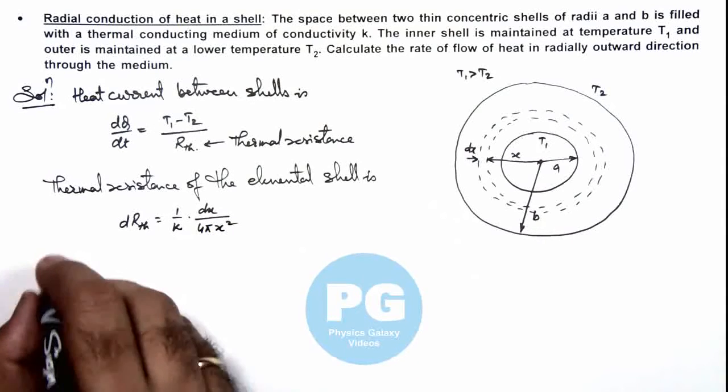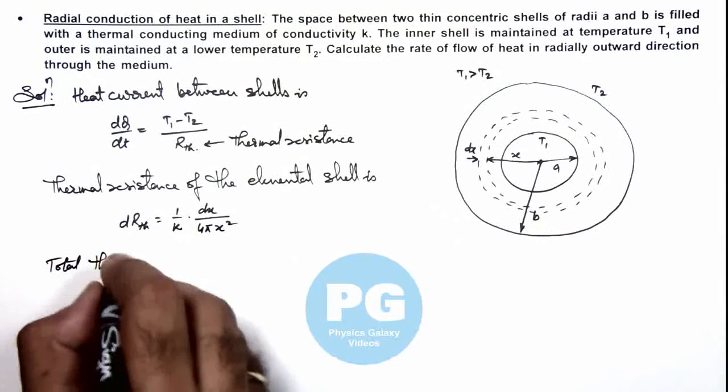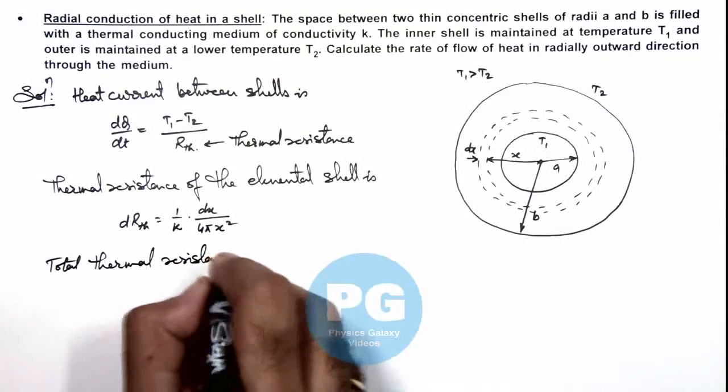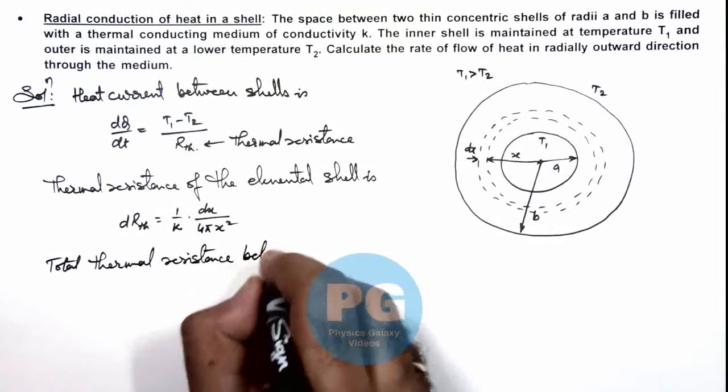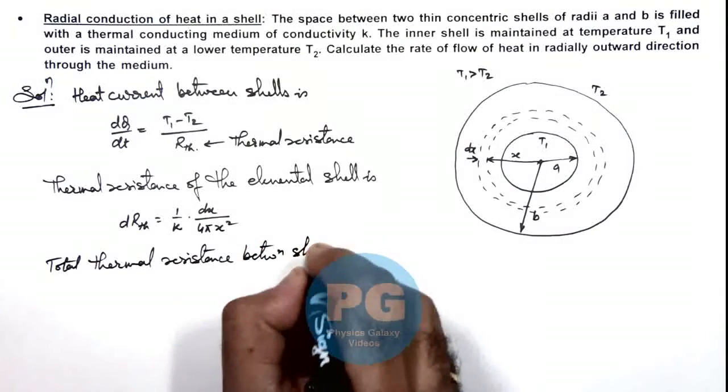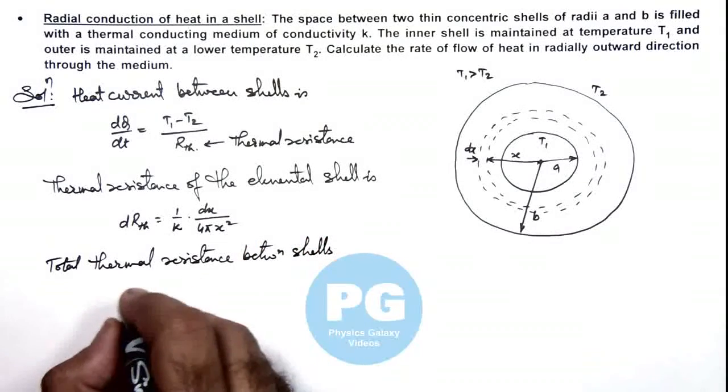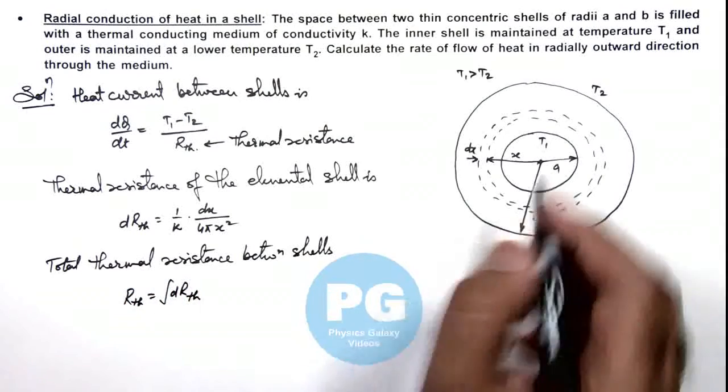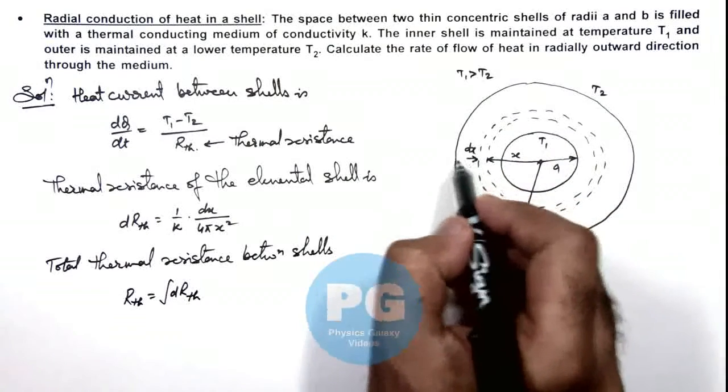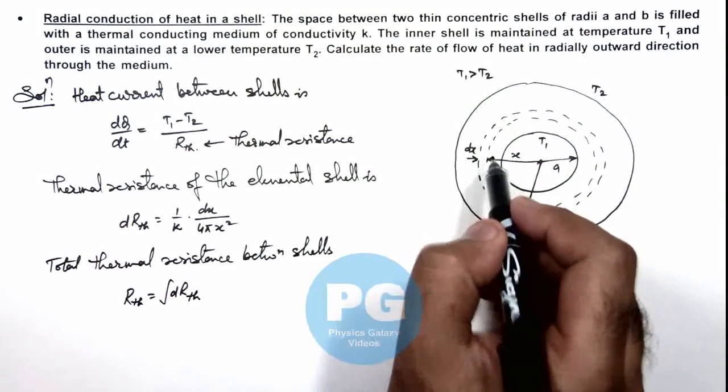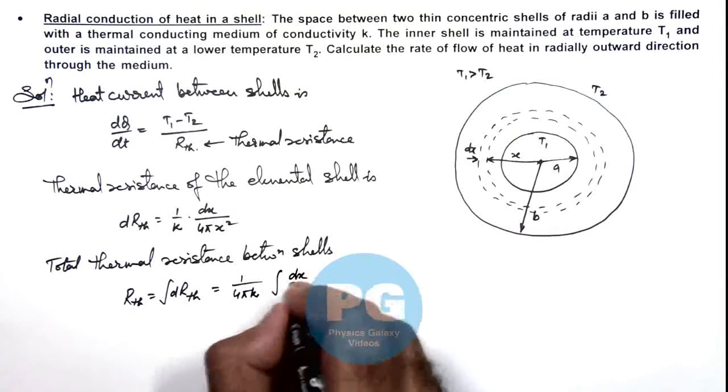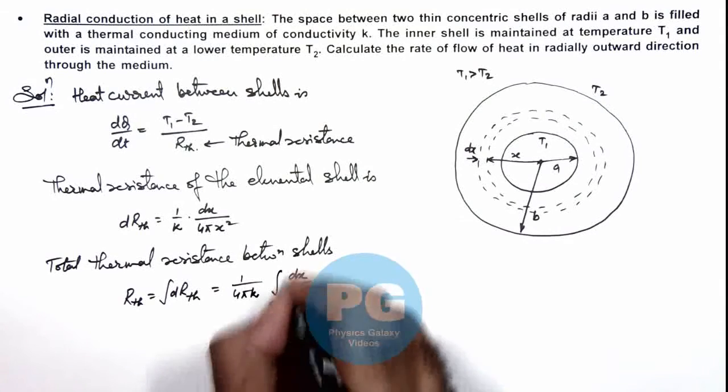So total thermal resistance between shells can be given as R_thermal is the integration of dR_thermal. Here we consider all such elemental resistances as being in series. So this will be 1/(4πk) times the integration of dx/x² from a to b.